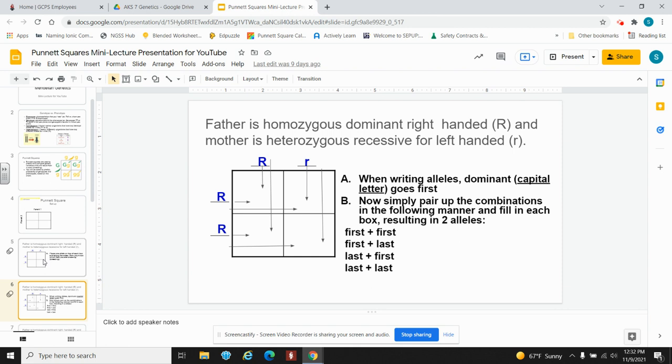You might want to use a pencil, a highlighter, or even your finger to follow along. A couple of rules. We are going to write the capital letter first when writing genotypes. Each genotype is comprised of two letters, representing an allele from the mother and an allele from the father.